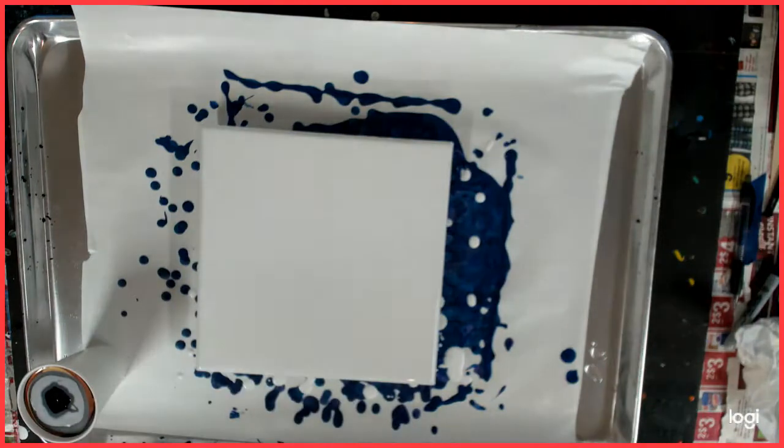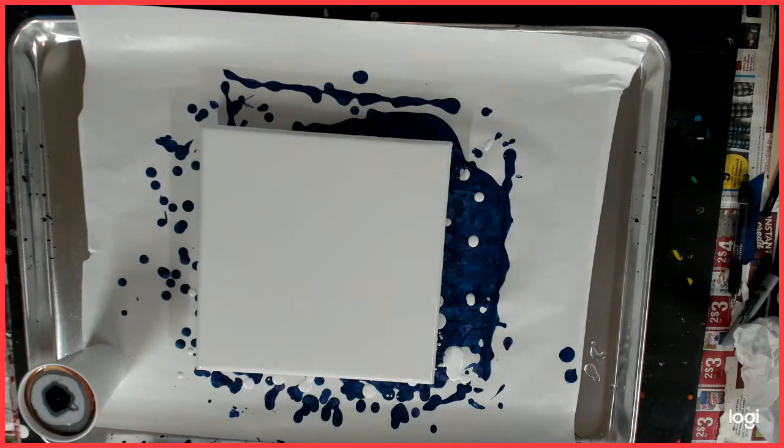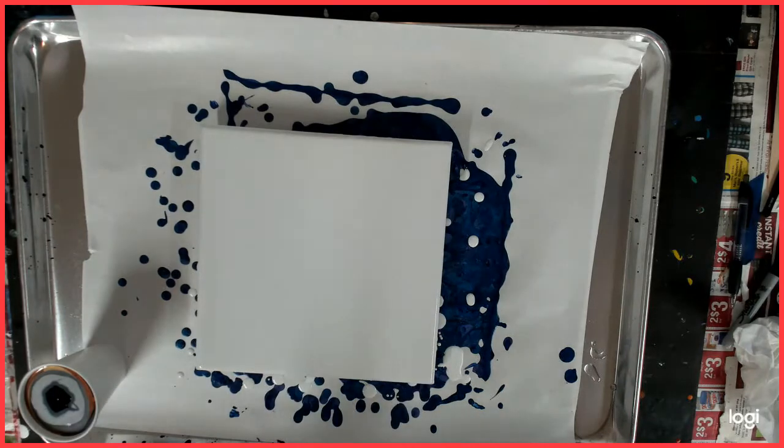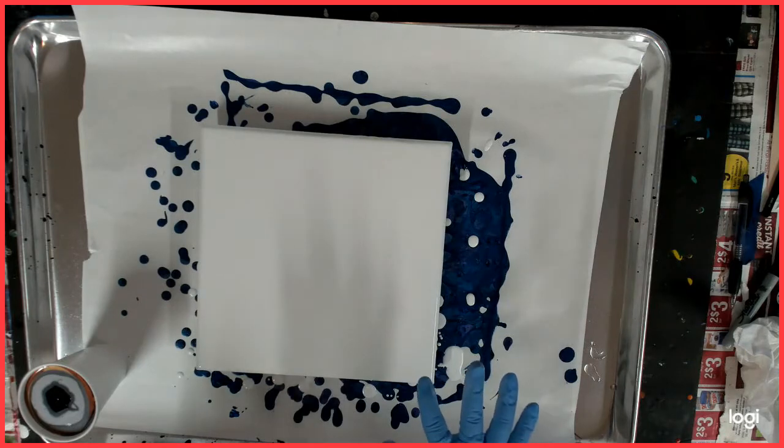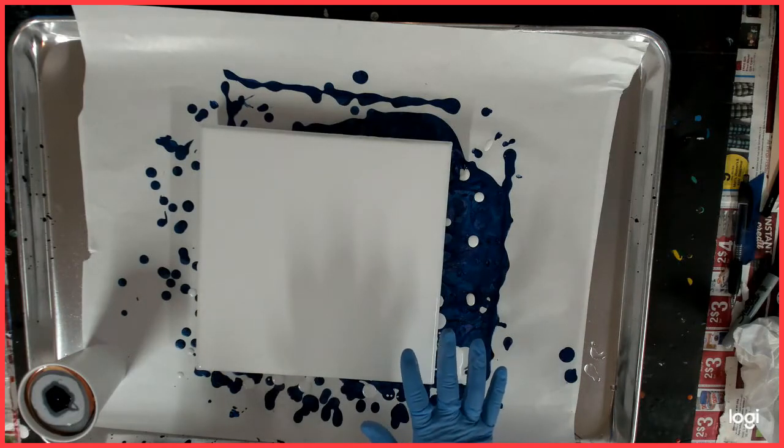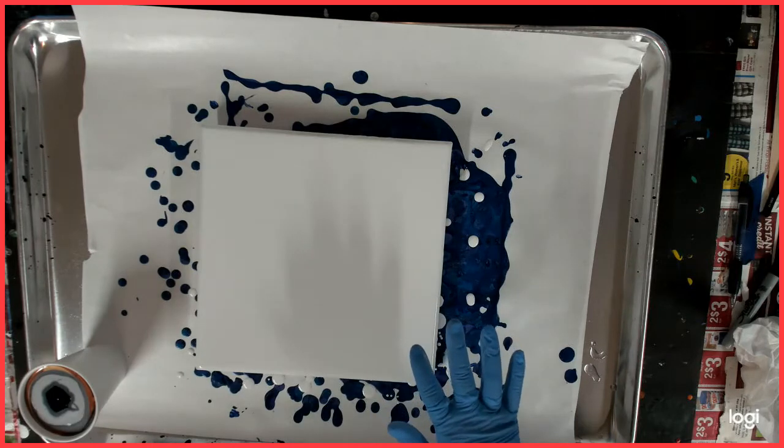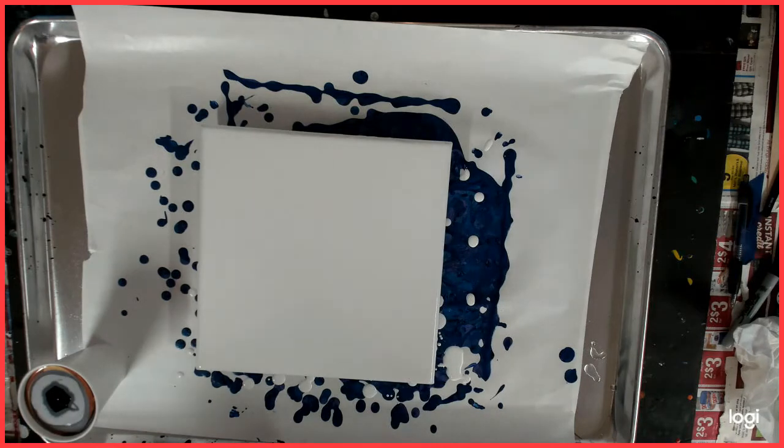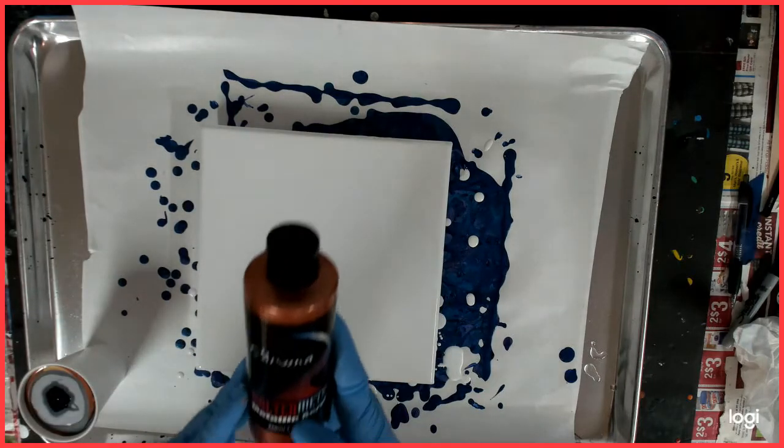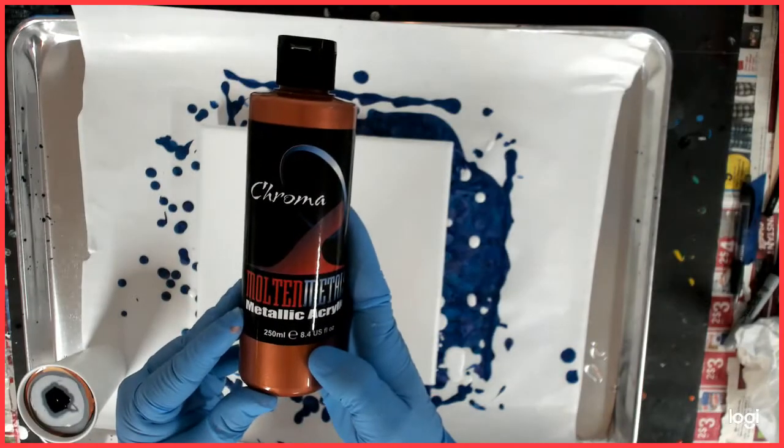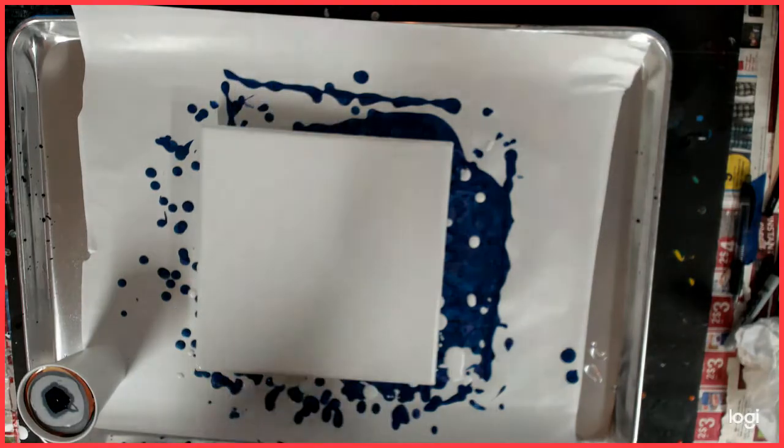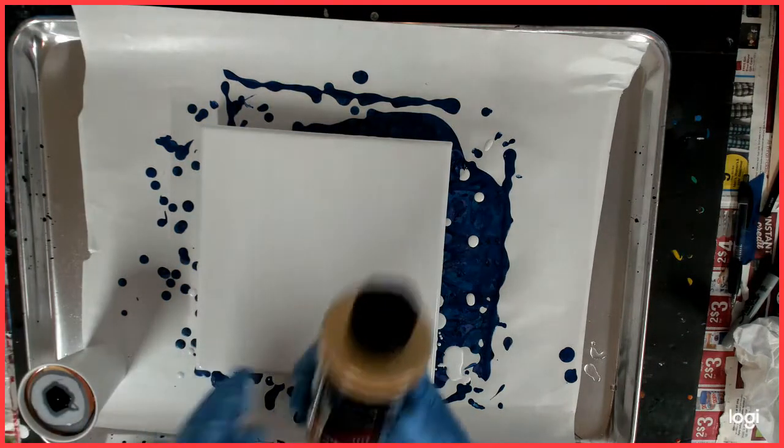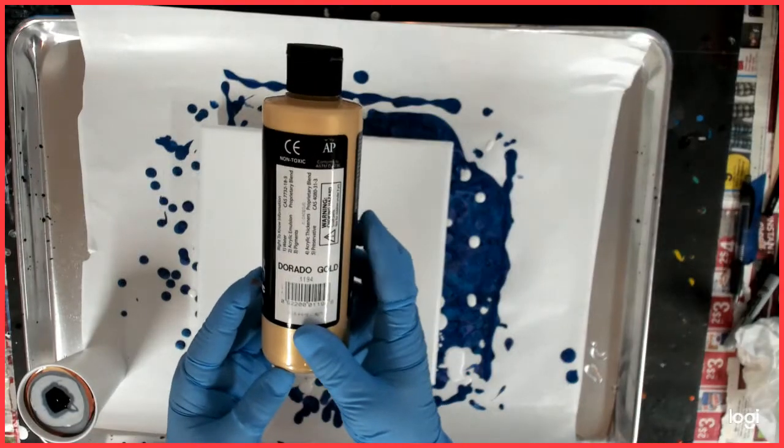So I'm going to use the same colors, except this time I have a white base, which is the Artist Loft acrylic flow white. And then I'm using the Creative Inspirations Lamp Black and the Chroma copper, the Chroma Dorado Gold.